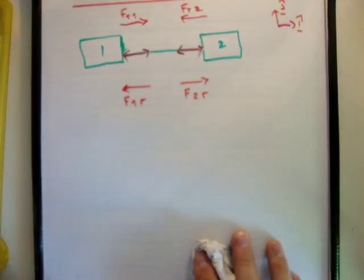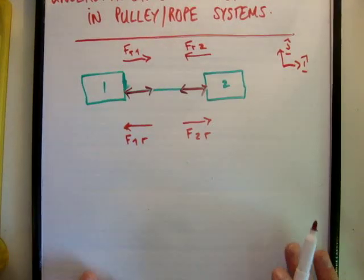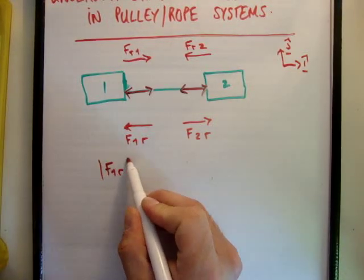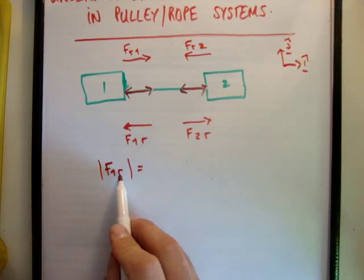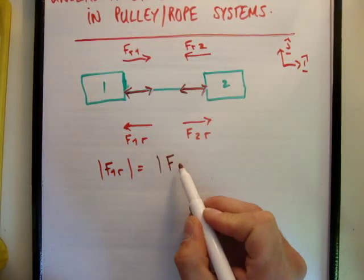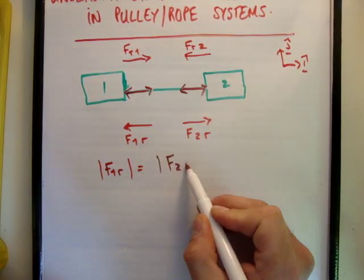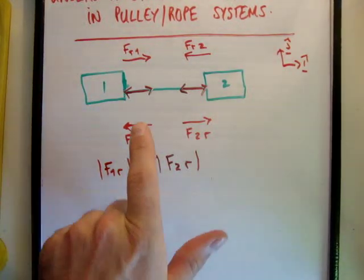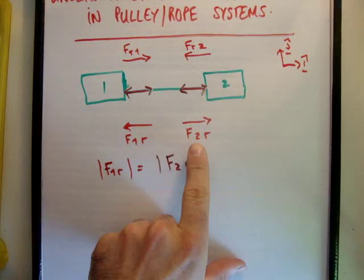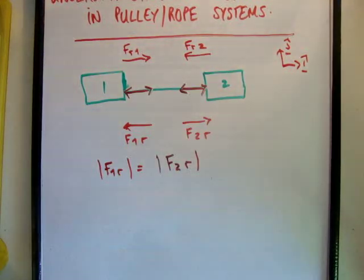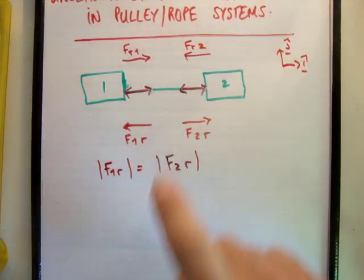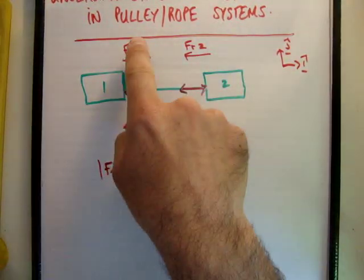For a massless rope, the magnitude of F1R — the force of block one on the rope — equals the magnitude of F2R — the force of block two on the rope. Now looking at our Newton's third law pairs: F1R equals FR1, and F2R equals FR2. So the force of block two on the rope equals the force of the rope on that block, and similarly for block one.